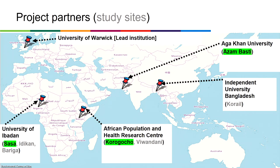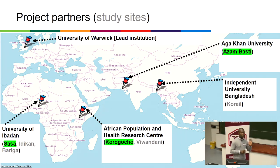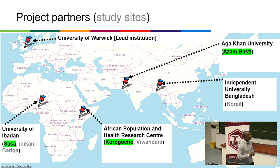The project partners: the University of Warwick is the lead institution. In Africa, we're working with the University of Ibadan in Nigeria and the African Population and Health Research Center in Kenya. In Asia, we're working with Aga Khan University in Pakistan and Independent University of Bangladesh. There are about seven slums we are studying; for this presentation I'll highlight results from Shasha in Nigeria, Korogocho in Kenya, and Azambasti in Pakistan.